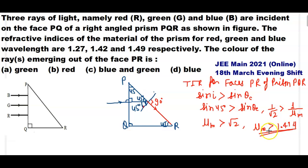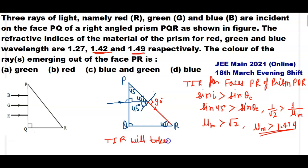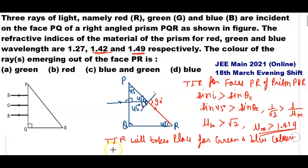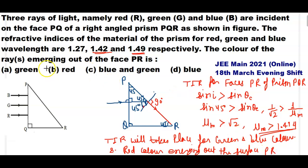This means the color whose refractive index is greater than 1.414 will undergo TIR, and the color whose refractive index is less than 1.414 will emerge. Green (1.42) and blue (1.49) have refractive indices greater than 1.414, so TIR will take place for green and blue. Red (1.27) will emerge out of the surface PR. Therefore, the correct answer is option B.